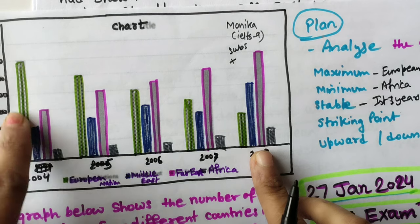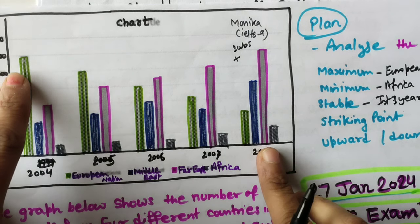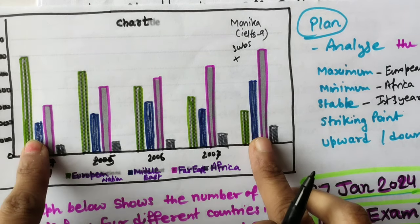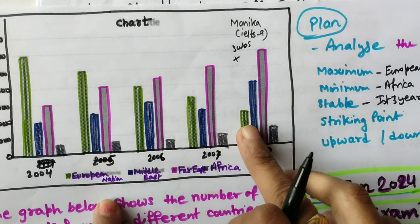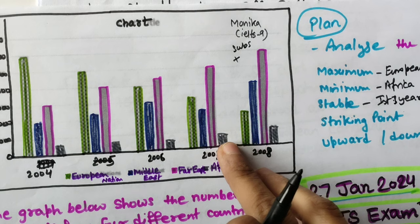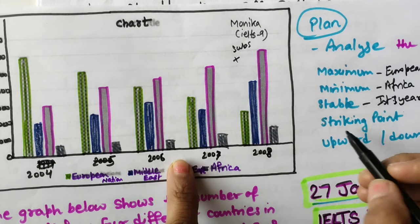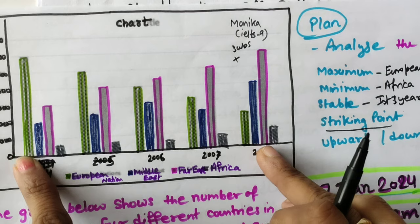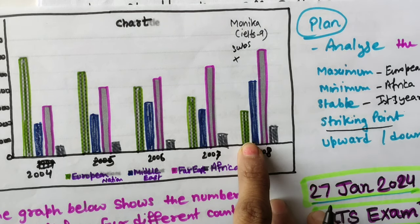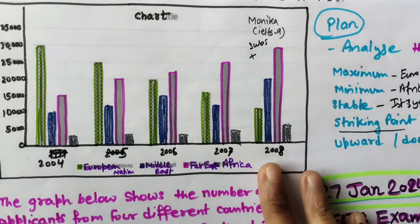For any striking point: you can note that an opposite trend can be seen in the last year compared to the first year. Those who were at the highest initially followed a downward trend, while others grew. There's no dramatic striking point, but you can mention this opposite trend at the end versus the beginning.